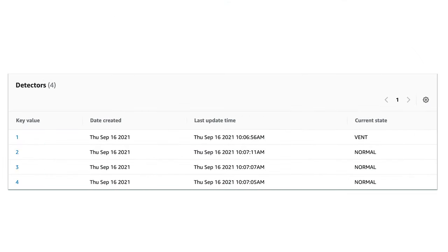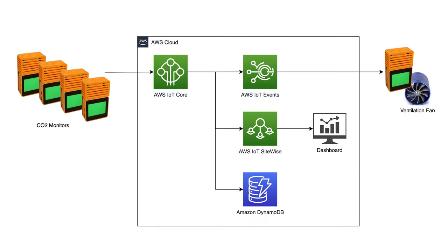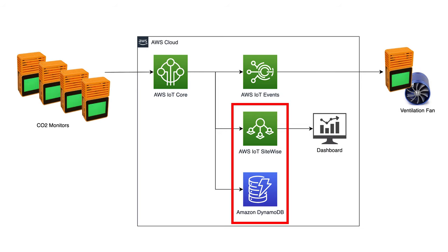There are a total of four detectors because there are four CO2 monitors. The measured CO2 levels received by AWS IoT Core are also directed to AWS IoT SiteWise for real-time data visualization, and Amazon DynamoDB for later analysis.